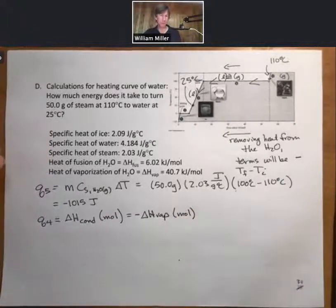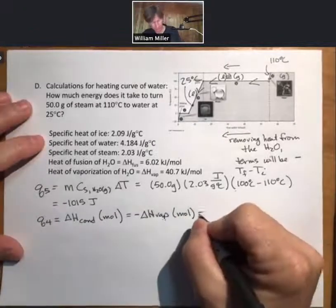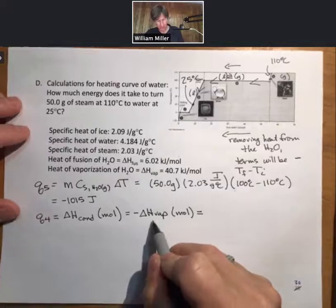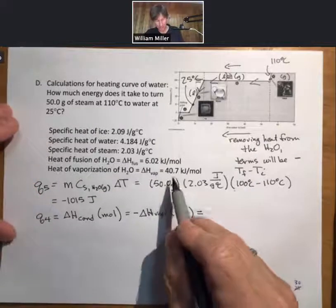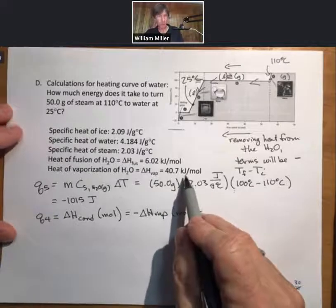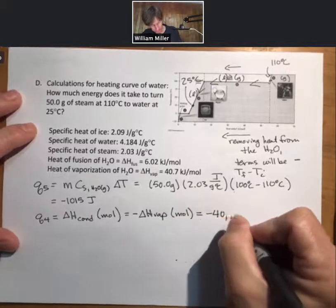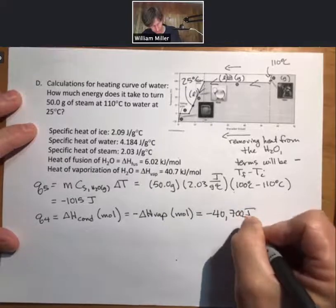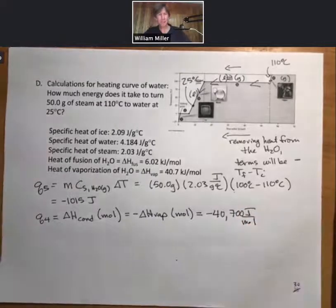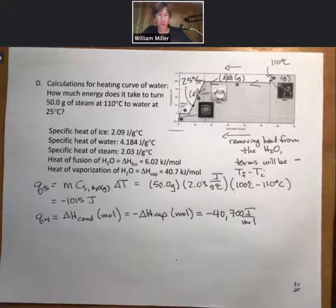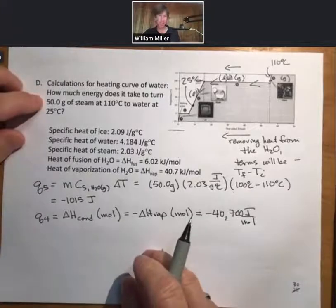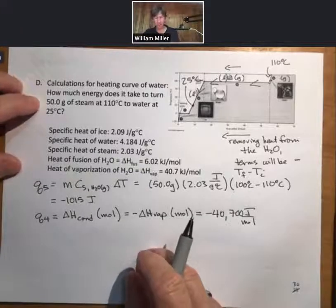Times moles. I tend to write it as minus delta H vaporization times moles, however you do it. My delta H of vaporization is 40.7 kilojoules per mole. That's minus 40,700 joules per mole with a negative sign. And my moles come from the fact that I have 50 grams of H2O.